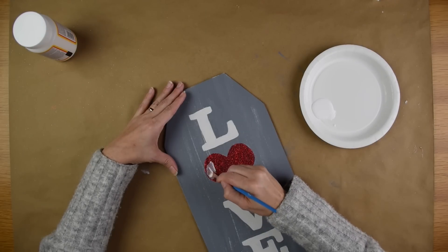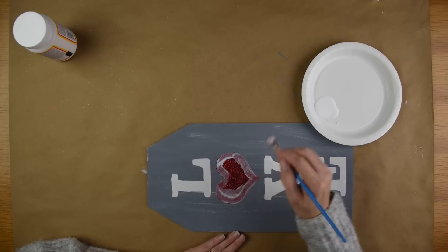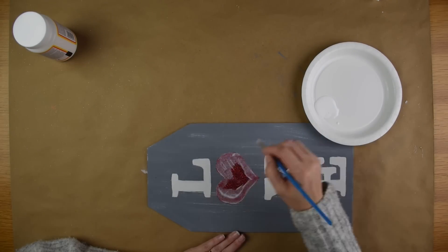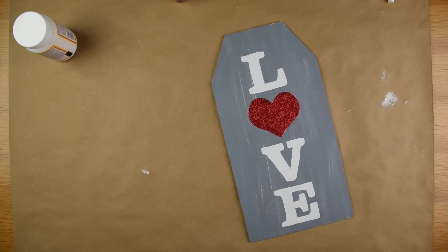So to finish up this project I waited for my glue to dry and then I went ahead and put another coat of Mod Podge over my glitter and this is just to keep the glitter from shedding off. Don't worry that it looks white, it will dry clear and after it is dry it's ready to be displayed.